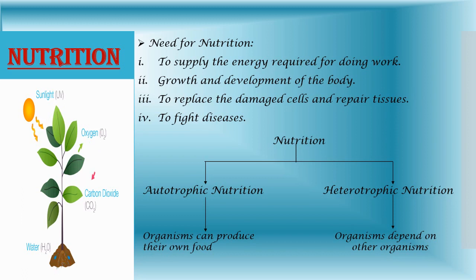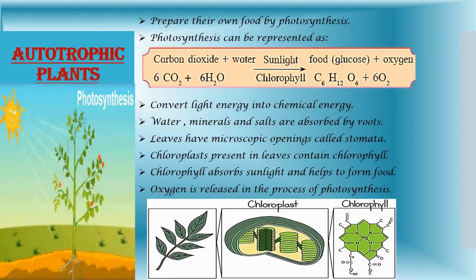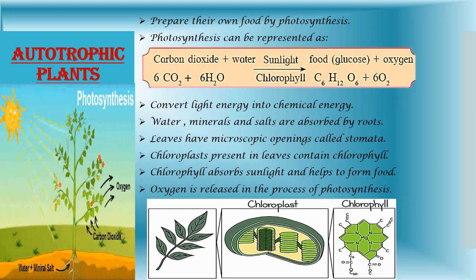The organisms which depend on other organisms, plants or animals, for their food is heterotrophic nutrition. Now, let's learn about autotrophic plants. Before that, tell me: how do plants prepare their own food?